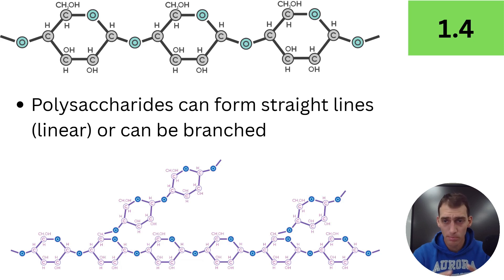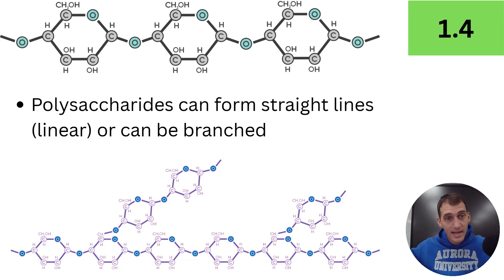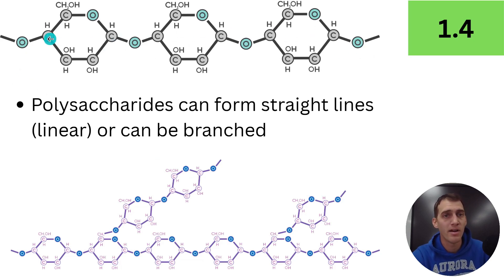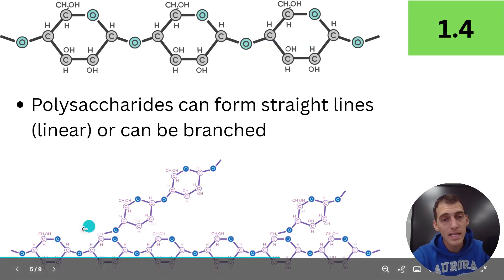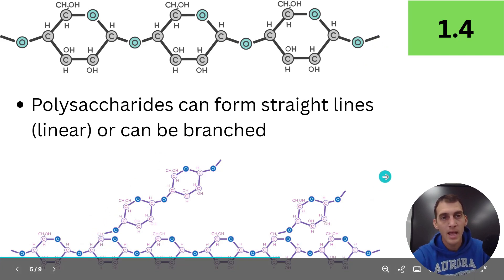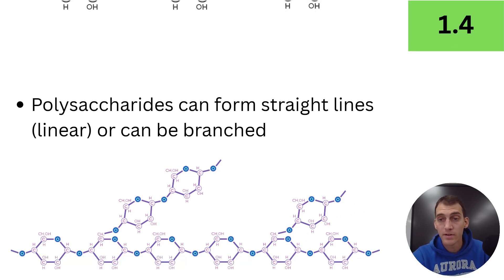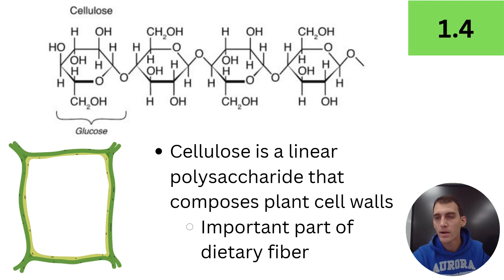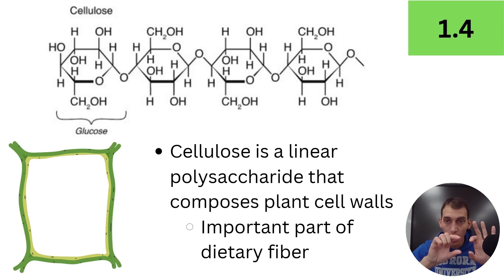Polysaccharides are long, long chains of monosaccharides. These long chains can form a straight line — here's a linear polysaccharide with covalent bonds forming between them — or they can be branched, with branches coming off of a straight line. Polysaccharides can come in both of those different conformations. One example that will be important later in the AP Biology curriculum is cellulose. Cellulose is a linear polysaccharide, which means the glucoses that make up cellulose are in a straight line.